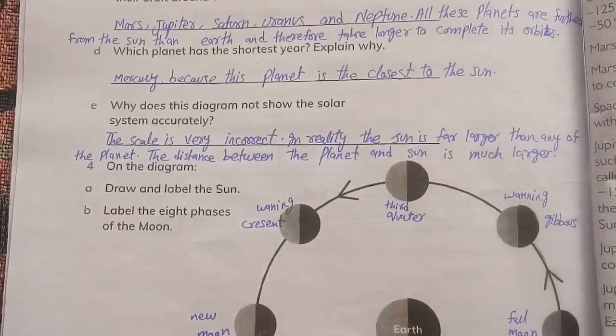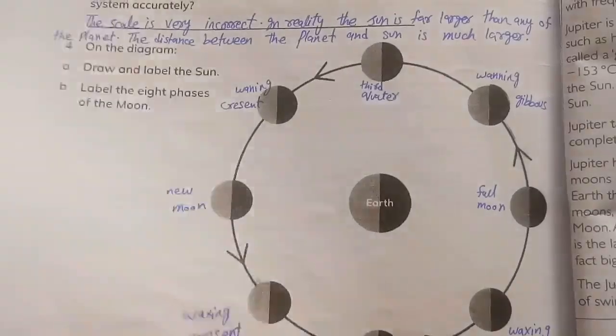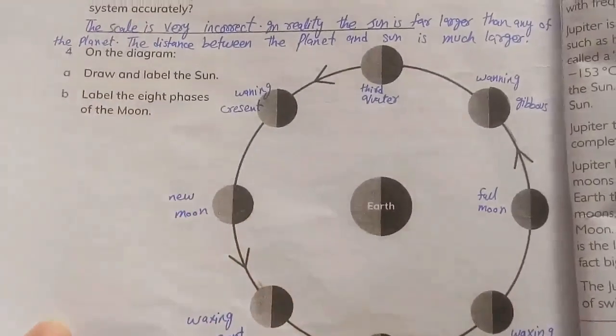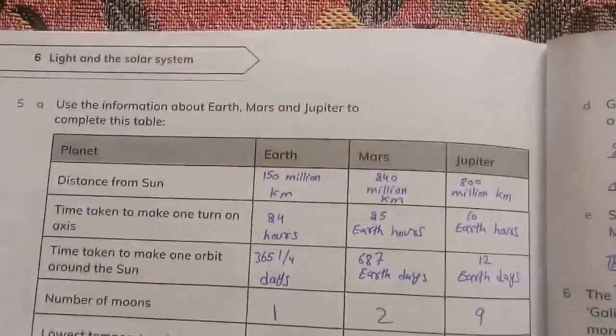Now question number 4: On the diagram, draw and label the Sun, label the eight phases. I have drawn and labeled the full moon and its phases. Now come towards page number 90.